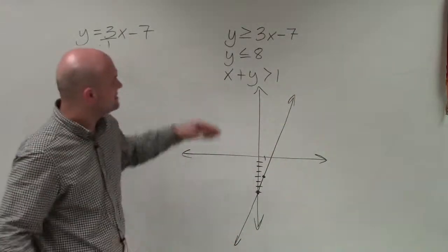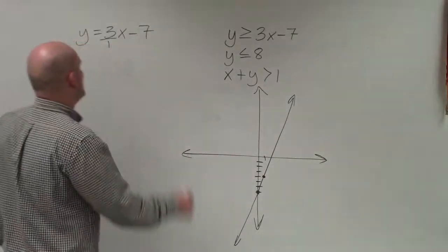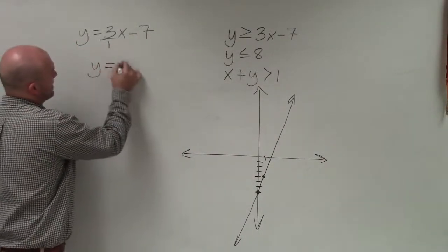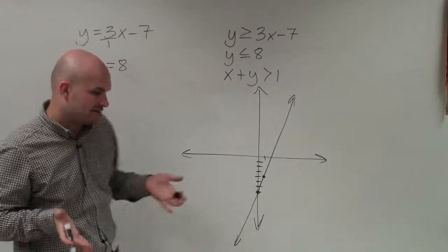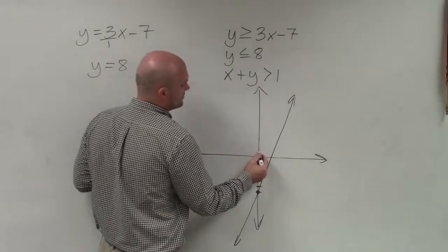Now if it's not a part of the solution, then we'll represent it as a dashed line, which we'll do in this case. The next equation we want to graph is y equals 8. Now we could do a table of values, but hopefully at this point you understand that when y equals 8, you understand that the y value is always equal to 8.